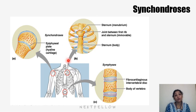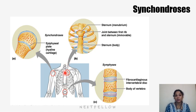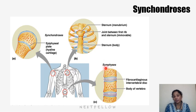Other examples include the spheno-occipital joint between the sphenoid and occipital bone, and the manubriosternal joint between the manubrium and sternum. These are all examples of primary cartilaginous joints. On the other hand, symphysis represents the secondary cartilaginous joint, which is seen in the intervertebral disc, to be discussed next.